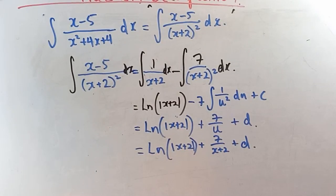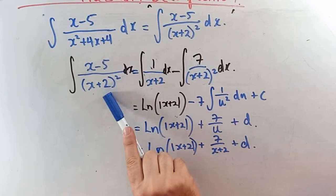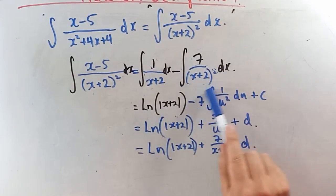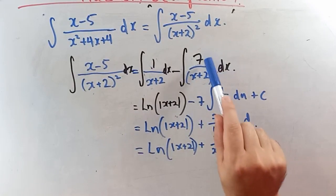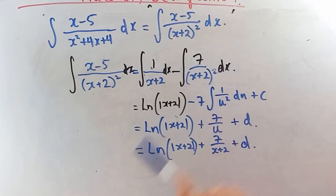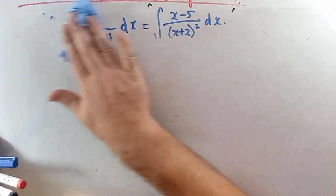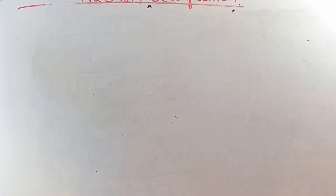When you have a repeated factor, you need a repeated factor on one of your partial fractions. That's a trick you need to be aware of. And there's one more trick coming up.